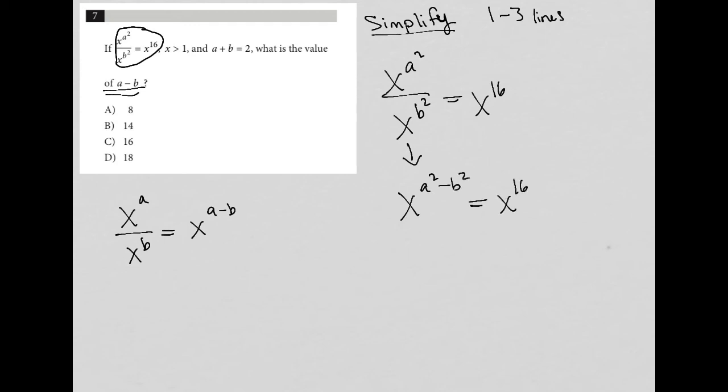Well, if these two things are equal to each other, I have the same base on both sides. That means that my exponents have to be equal to each other. So I can take that one step further and say that a squared minus b squared must equal 16.